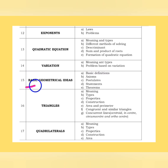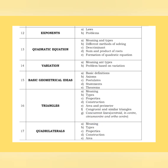Basic geometrical ideas: definitions, axioms, postulates, statements and theorems. Moving to triangles — very important: meaning, types, properties, constructions, area and perimeter, congruent and similar triangles, concurrent lines, centroid, incentre, circumcentre and orthocentre. In quadrilaterals: meaning, types, properties, construction, and areas of quadrilaterals.